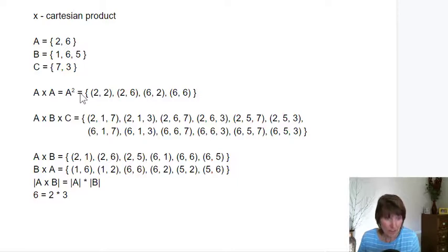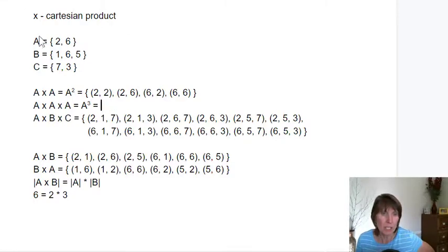We can go further than that. We could do the combination of triples with the same one as well. So this is A Cartesian product A Cartesian product A, and this would be A cubed. How many would this be? How many combinations? It would be two times two times two, so we're going to get eight combinations. These ones, since it's three different ones, they're going to be sets of triples.